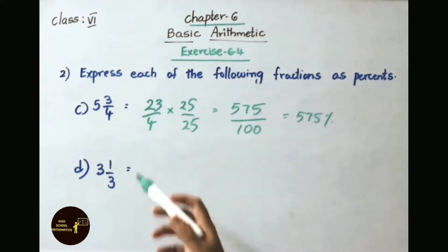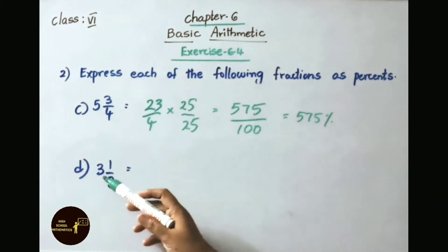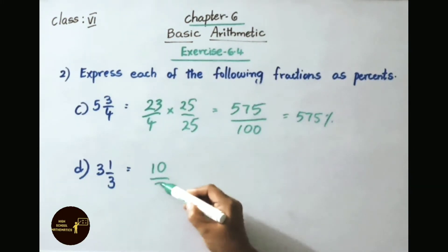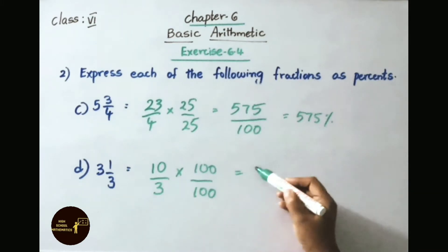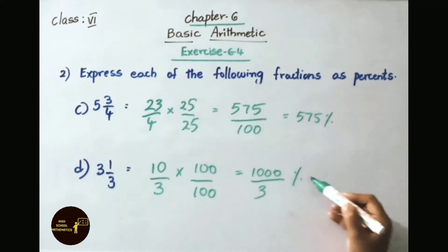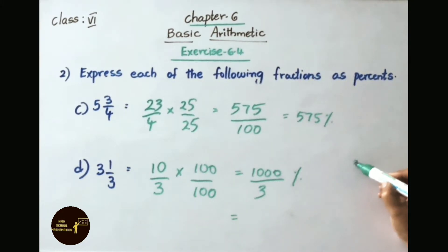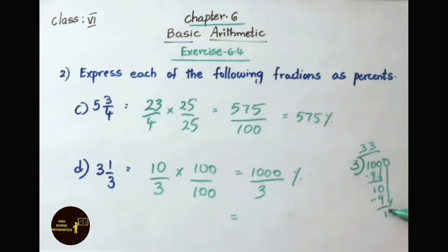Question D: 3 and 1 by 3. Convert the mixed fraction to an improper fraction: 3 threes are 9, plus 1 equals 10 by 3. Multiply numerator and denominator by 100: 10 into 100 is 1000 by 3, which can be written as a percentage. Dividing 1000 by 3: 3 threes are 9, remainder 1 each time, giving 333 and 1 by 3 percent.